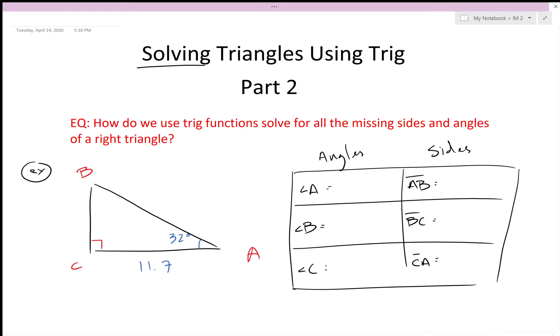We also have side AB, side BC, and side CA. Some of these things were given, some of them we need to find. Let's start with what we're given. Starting, I see the 11.7, that's a side length next for side CA, so 11.7 goes right here.